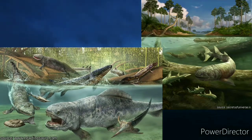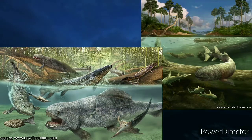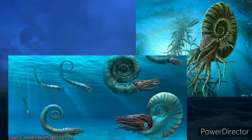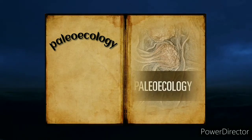Dunkleosteus terrelli shared its environment with marine turtles, reptiles, amphibians, mammals, and sharks. This giant of the seas certainly could attack and probably eat anything that moved in front of it — even other Dunkleosteus. Some researchers found traces and adaptations suggesting it also ate ammonites and mollusks.